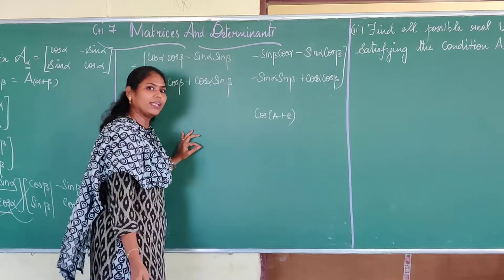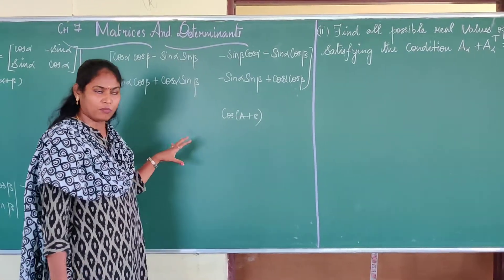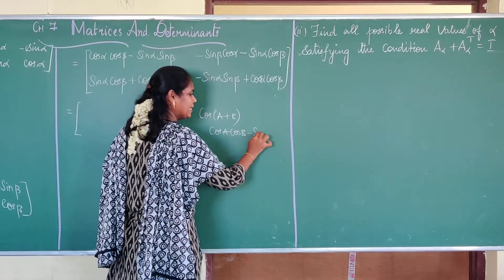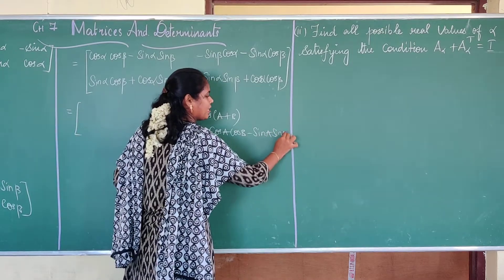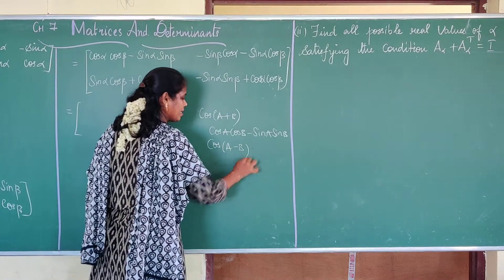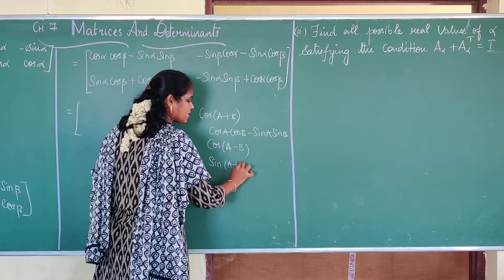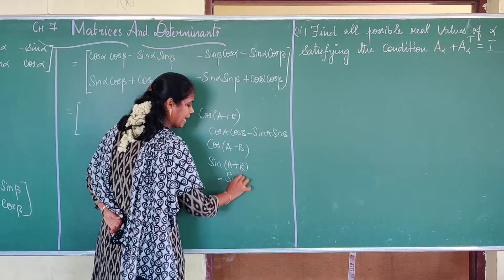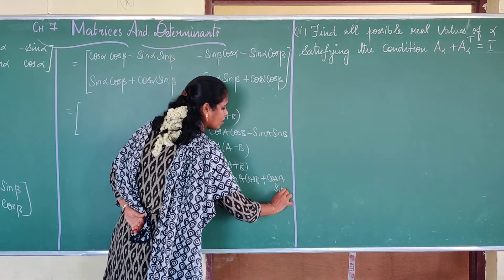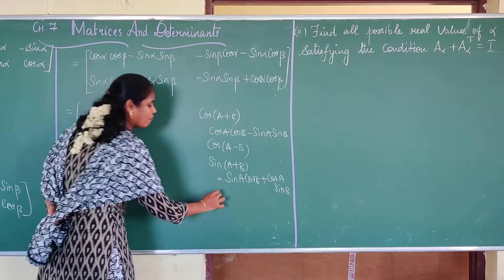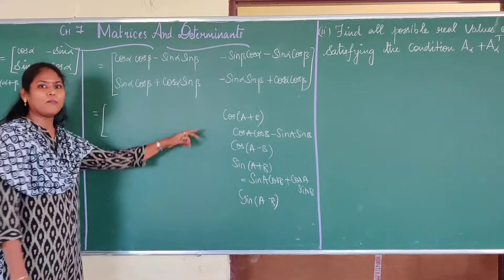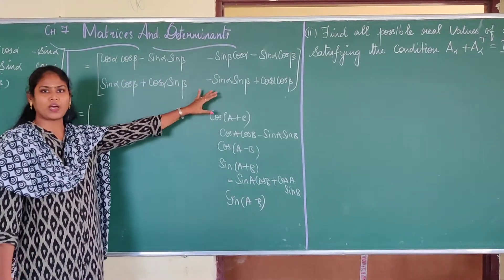You have formulas like this in trigonometry. cos(a + b) is nothing but cos a · cos b minus sin a · sin b. And similarly you have formulas for cos(a − b). sin(a + b) is nothing but sin a · cos b plus cos a · sin b. And you have a formula for sin(a − b) also.